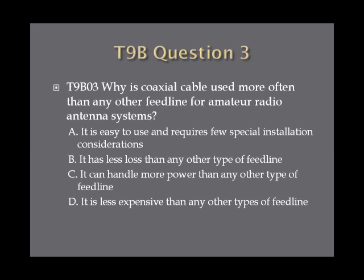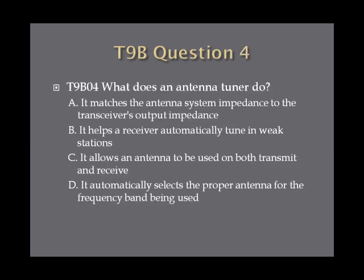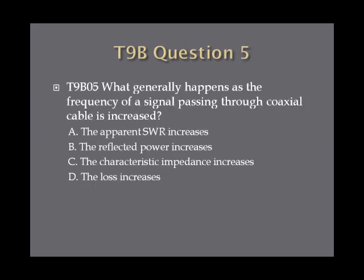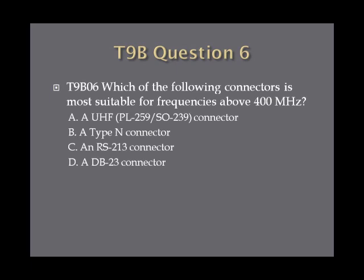Question 3. Why is coaxial cable used more often than any other feed line for amateur radio antenna systems? A. It is easy to use and requires few special installation considerations. B. It has less loss than any other type of feed line. C. It can handle more power than any other type of feed line. Or D. It is less expensive than any other type of feed line. Question 4. What does an antenna tuner do? A. It matches the antenna system impedance to the transceiver's output impedance. B. It helps the receiver automatically tune in weak stations. C. It allows an antenna to be used on both transmit and receive. Or D. It automatically selects the proper antenna for the frequency band being used.